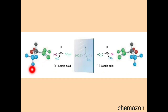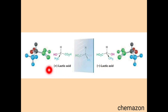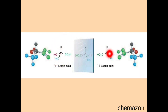Here is the example of enantiomers using the molecule lactic acid. When you see the mirror image of this molecule, if I try to superimpose the levorotatory lactic acid molecule on the other, it is not possible. So these are mirror images as well as non-superimposable, hence they are called enantiomers.